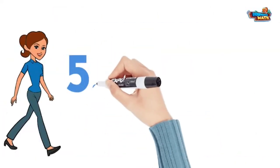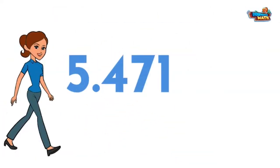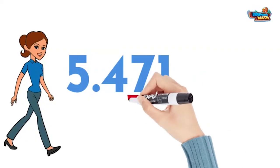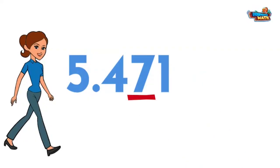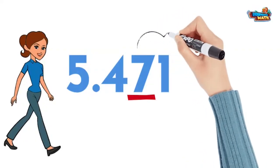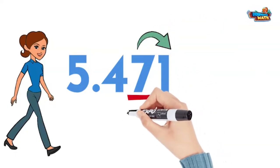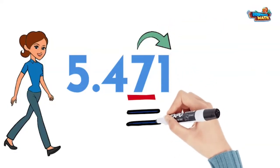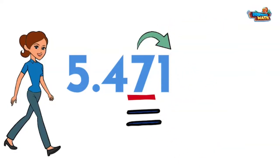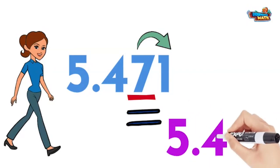Now you try. Round the number five and four hundred seventy-one thousandths to the hundredths place. Here are the steps in the process. First, underline the hundredths place. We will underline the digit seven. Now look to the right. We see a one. This means the digit in the hundredths place will remain the same, giving us the number five and forty-seven hundredths.